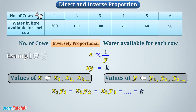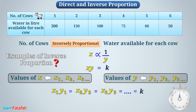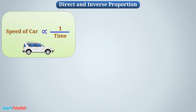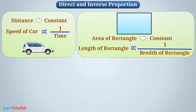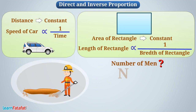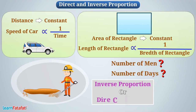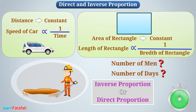Can you give some examples of inverse proportion? Think about it. The speed of a car is inversely proportional to the time taken by the car for covering a certain distance. If the area of the rectangle is constant, then the length of the rectangle is inversely proportional to the breadth of the rectangle. Can you tell me whether the number of men and number of days required to complete a certain work will be in inverse proportion or direct proportion? Discuss with your friends. I hope you understood the concept very well. Thanks for watching this video.